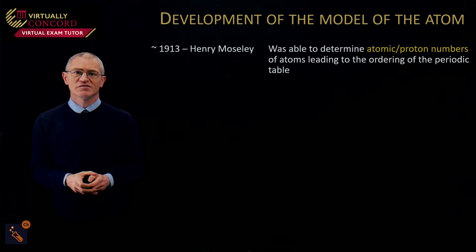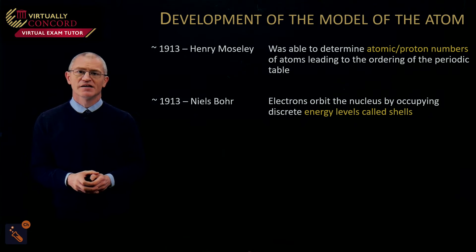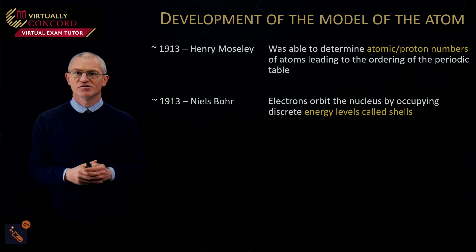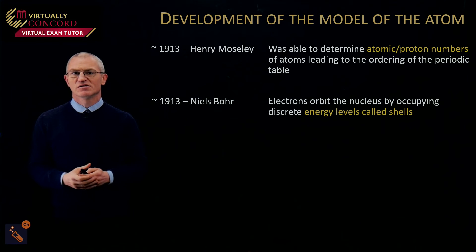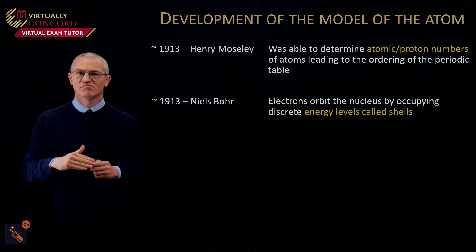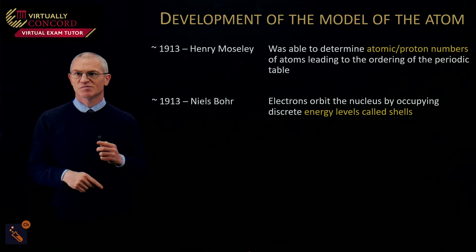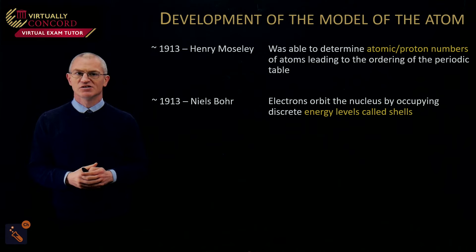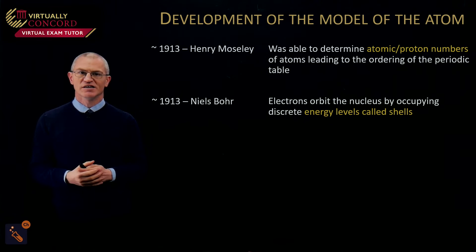Henry Moseley around 1913 determined atomic numbers, which led to the periodic table being ordered. Then Niels Bohr developed emission spectra — shining a certain frequency of light at an element and observing what it emits back. Because different frequencies of light were given out, electrons must be promoted to certain energy levels and fall back down, releasing a specific packet of energy. This proved that energy levels exist, which is how we got our shells.